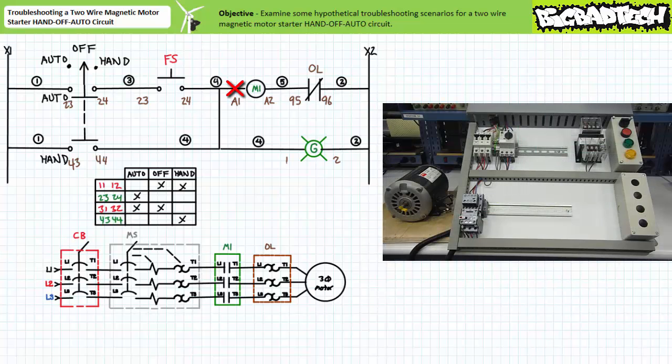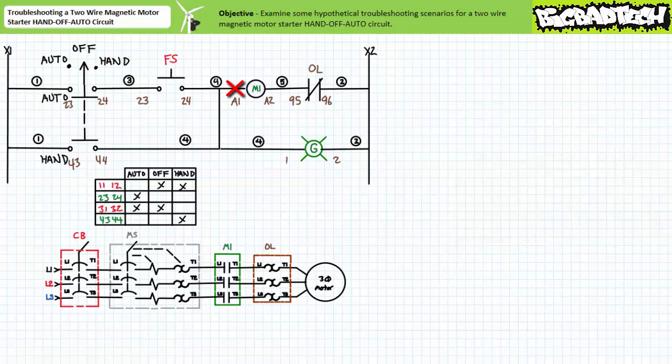Consider this circuit where I've purposely disconnected all wires leading to the A1 terminal of the M1 contactor coil. Neither the auto mode with the simulated float switch closed, nor the hand mode serves to start the motor. What's a technician to do? Obviously, the correct answer is to fix the system and wire the system as intended.